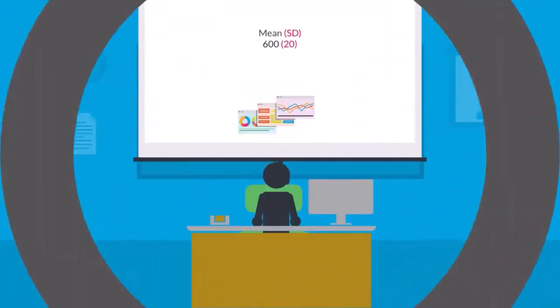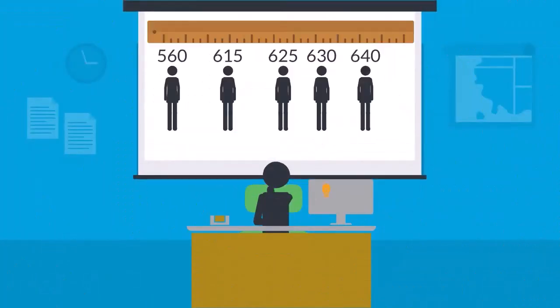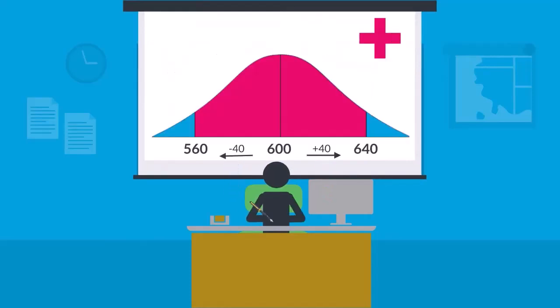When you see the mean and the standard deviation on a score report, it can help you get a quick idea of the distribution of students' scores by adding and subtracting one or two standard deviations from the mean.